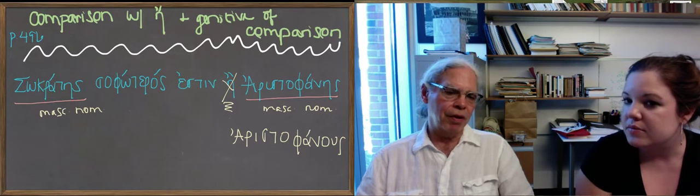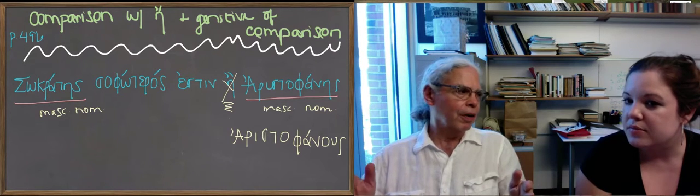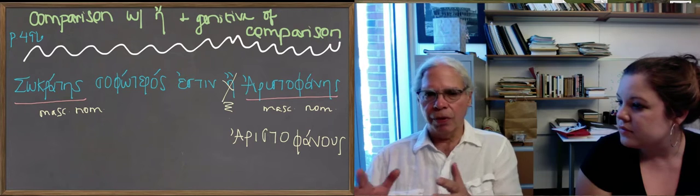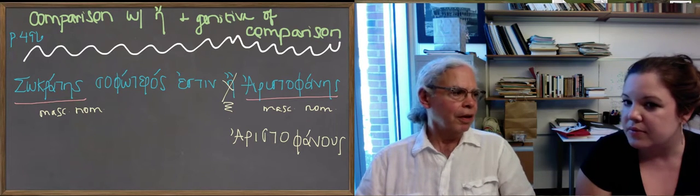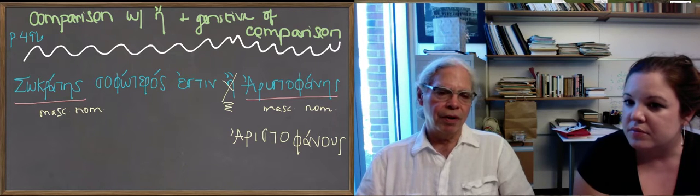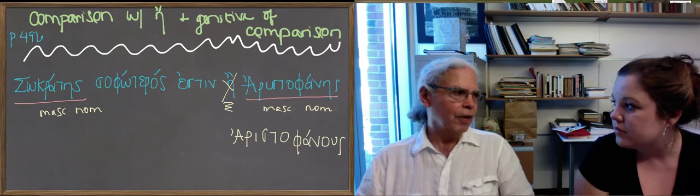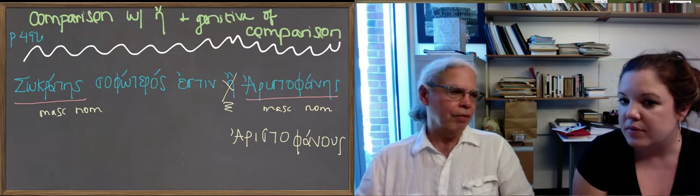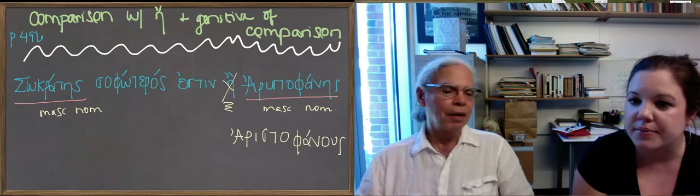the reason you're using the genitive without the adjective than is that it expresses the distinction, if you will, between Socrates and Aristophanes. What's different about them is about, and so since it's distinction, the notion of separation comes in. And that's why you have genitives in these cases, because that's the basic function of the genitive. We think of it as being of, but the of is really an extension of the idea of out of and away from.